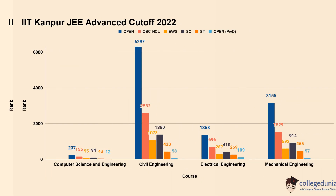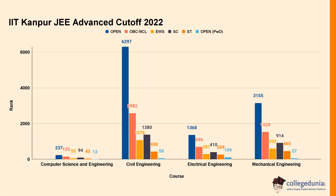For IIT Kanpur JEE Advanced cut-off 2022, Computer Science and Engineering: Open category 237, OBC-NCL 155, EWS 55, SC 94. For Civil Engineering: Open category 6297, OBC-NCL 2582, EWS 1078, SC 1380.